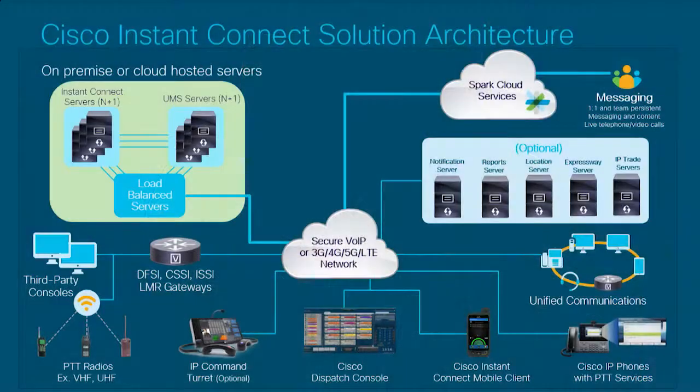As you see on the slide, when a new user — say a mobile client — wants to log in, they first contact the Instant Connect server with a username and password. That server returns the available channels, the user picks a channel to join, and does a SIP session with our UMS server. Both the Instant Connect server and the UMS servers are cluster redundant, meaning there are many instances.